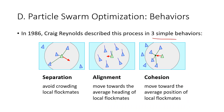The first behavior is separation. In separation, birds make sure that they are not crowding other birds in the flock — basically they are practicing social distancing.